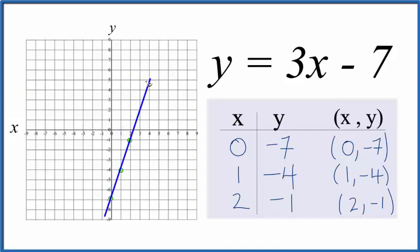Let's put a line through those. Then we can put arrows to show this goes to infinity. That's the graph for y equals 3x minus 7.